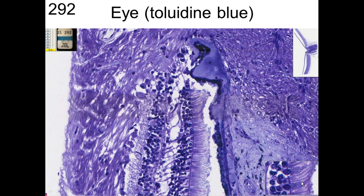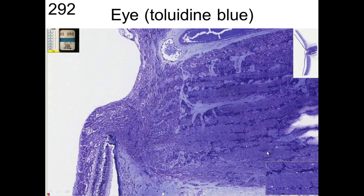Where the optic nerve enters the eye, there are no photoreceptor cells, making it the blind spot. We can see the optic nerve coming in and the stoppage of the photoreceptor cell layer. Rods and cones are visible in that region. Blood supply also enters here, with blood vessels visible feeding the inner retina.